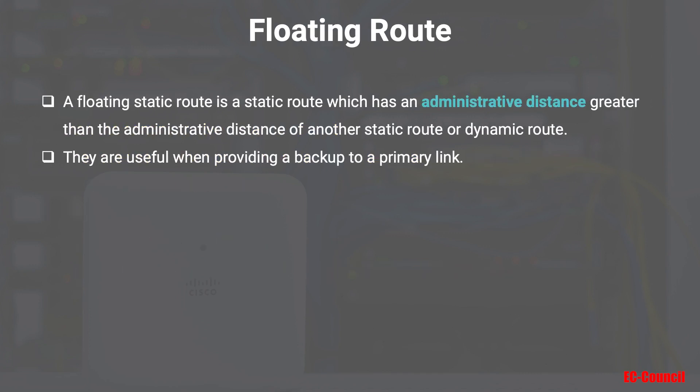When creating a static route, we can also create a floating route — a static route with an administrative distance greater than 1. Since the default administrative distance of a static route is 1, we can assign any higher AD value. This is very useful for providing a backup route to a primary link.